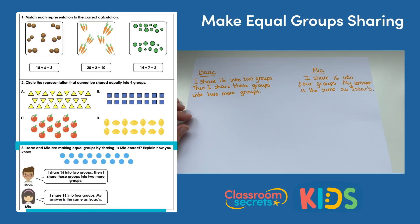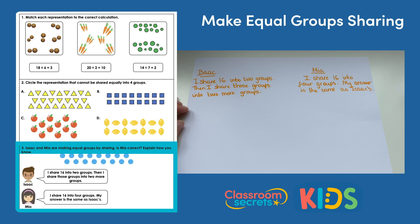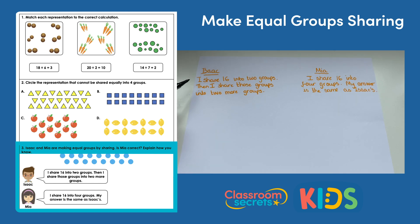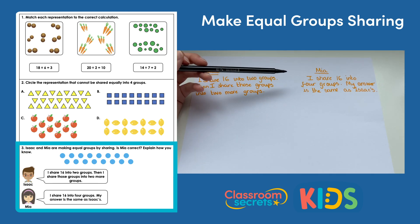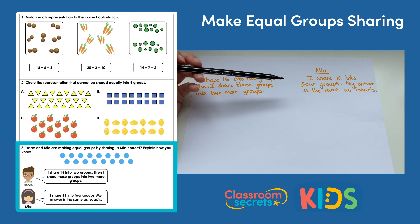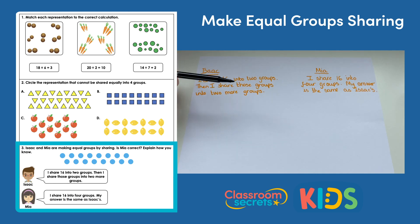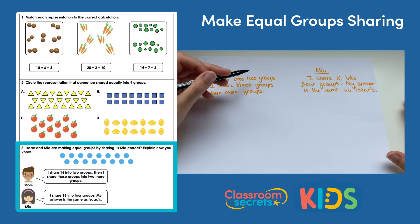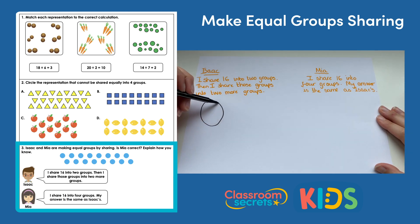Question three: Isaac and Mia are making equal groups by sharing. Is Mia correct? Explain how you know. Isaac says: I share 16 into two groups, then I share those groups into two more groups. Mia says: I share 16 into four groups — my answer is the same as Isaac's. Let's start by working this out, beginning with Isaac, who first shares 16 into two groups.